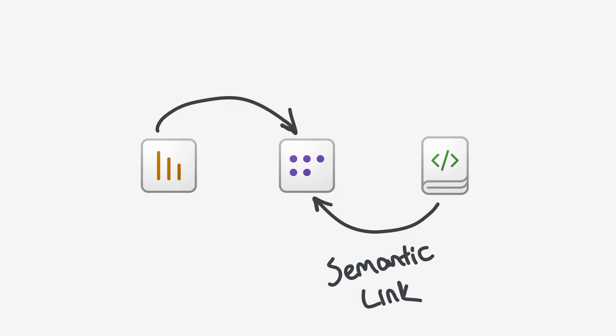This lets people be able to explore your semantic model and use the logic that you've defined in it programmatically, for example, using programming languages like Python for their own analyses and validations. A notebook can also be used to transform data and write it to OneLake — not necessarily data from your semantic model, but data from any source. Then these delta tables can be used by your semantic model.